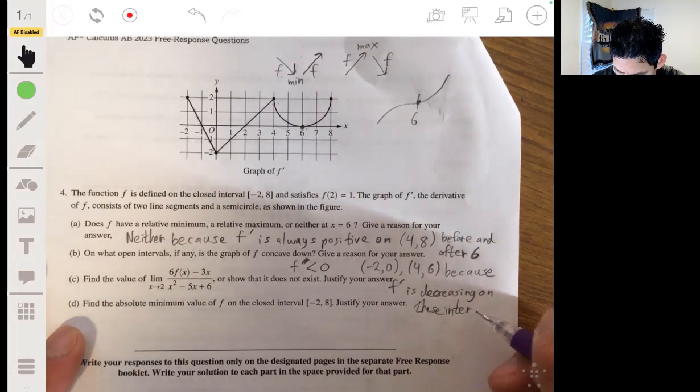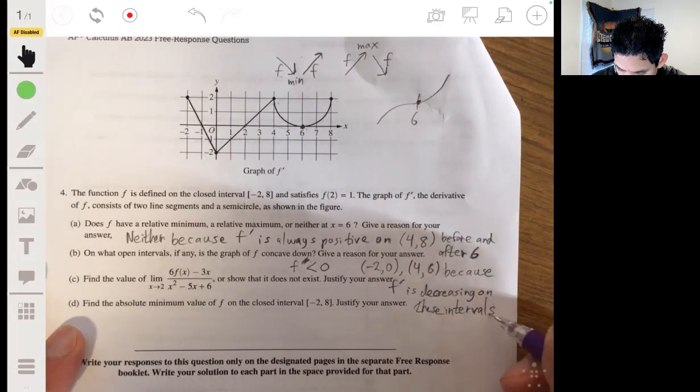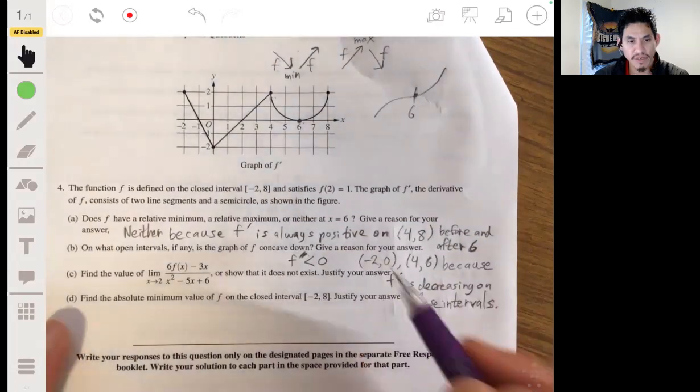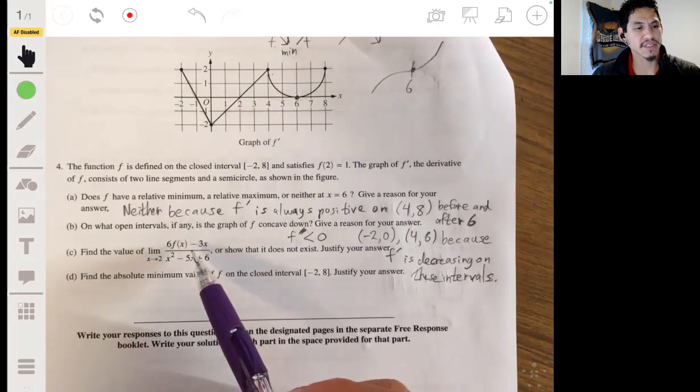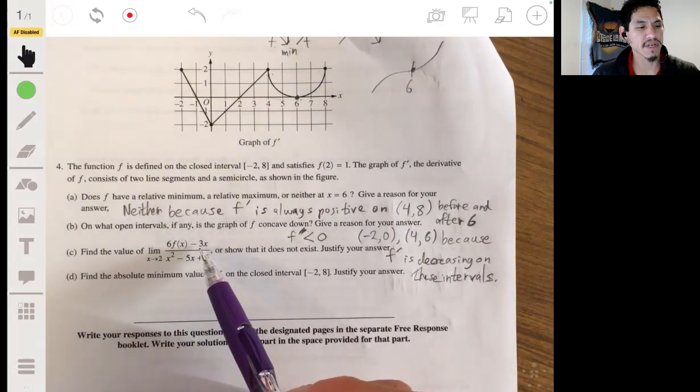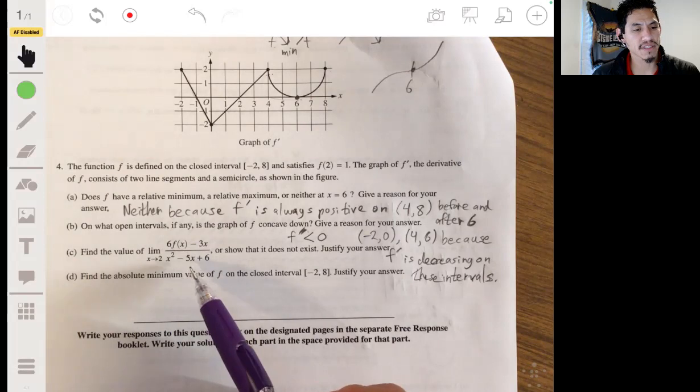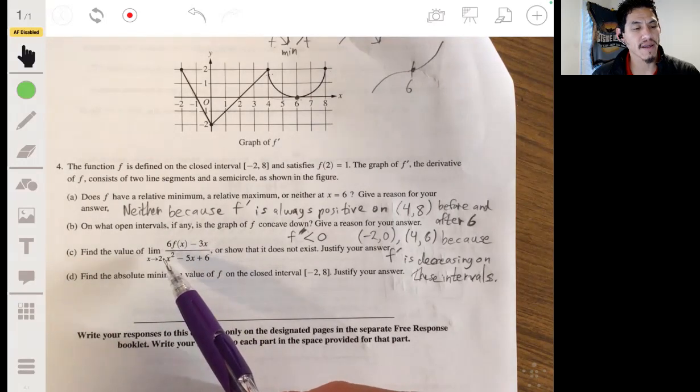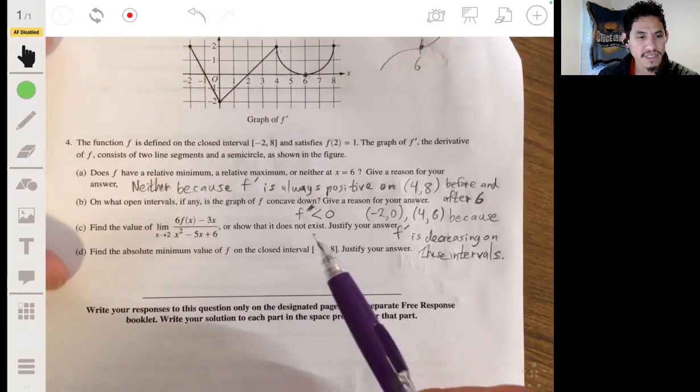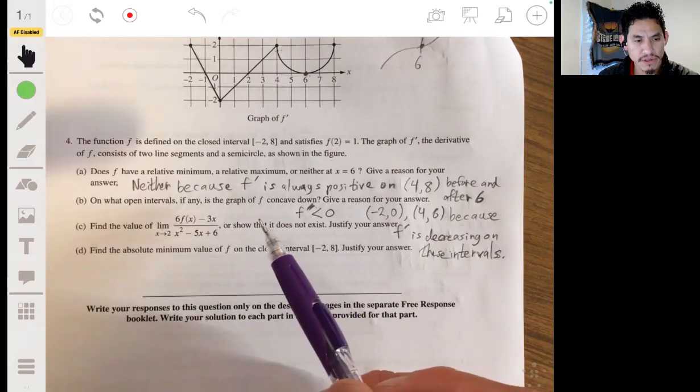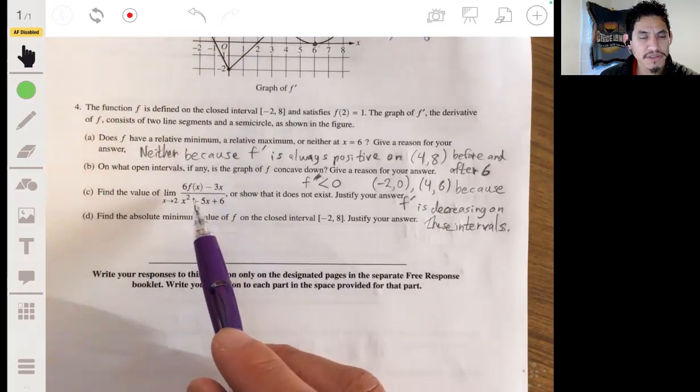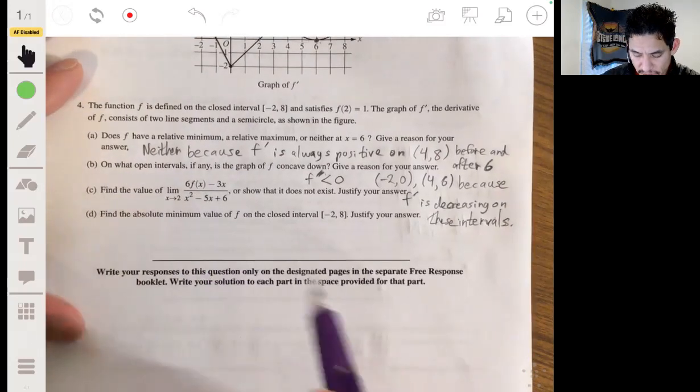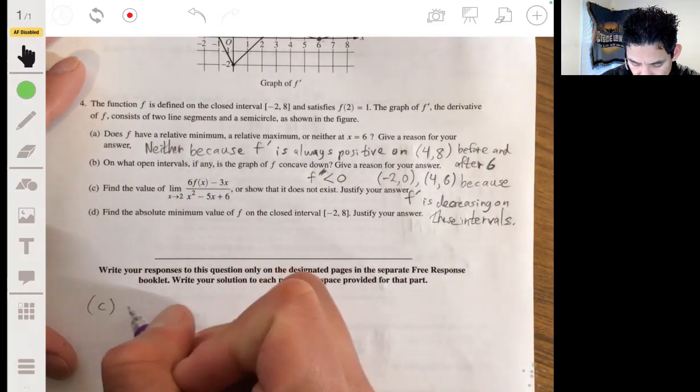I'm guessing that your exam had more room than this. I kind of wanted to fit in there just because. All right. Part c, find the value of the limit of 6f(x) minus 3x over x squared minus 5x plus 6 as x approaches 2, or show that it does not exist and justify your answer. Okay. So we always want to use direct substitution. That's always the first thing you want to do. See if it works.